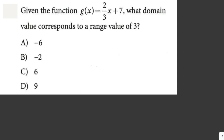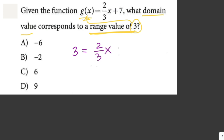Given the function g(x) equals 2/3 x plus 7, what domain value corresponds to a range value of 3? The range value is the output — the value of g(x) — and the domain value is the input, the value of x. So we substitute 3 for g(x): 3 equals 2/3 x plus 7.